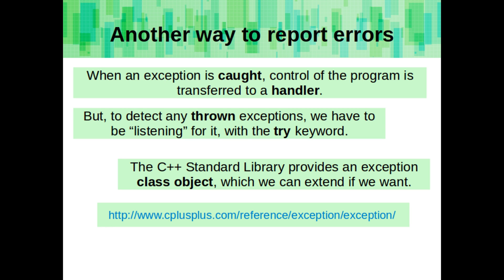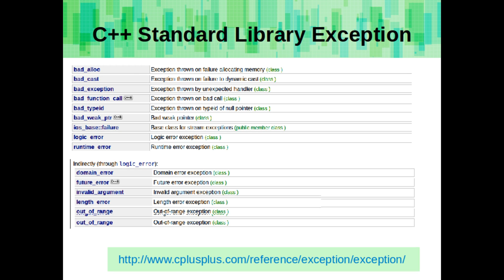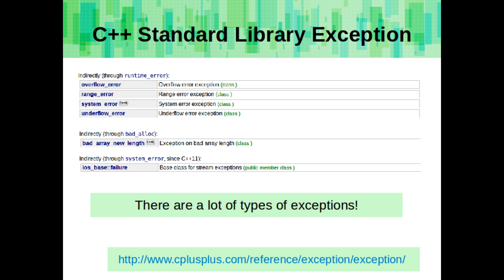When an exception is caught, control of the program is transferred to a handler. To detect any thrown exceptions, we have to be listening for it — we use the try keyword to do this. The C++ standard library also provides an exception class object that we can extend and add error messages and special types. Here's a list of some of the exception types from the C++ standard library — you don't have to memorize these; they're just here for reference.